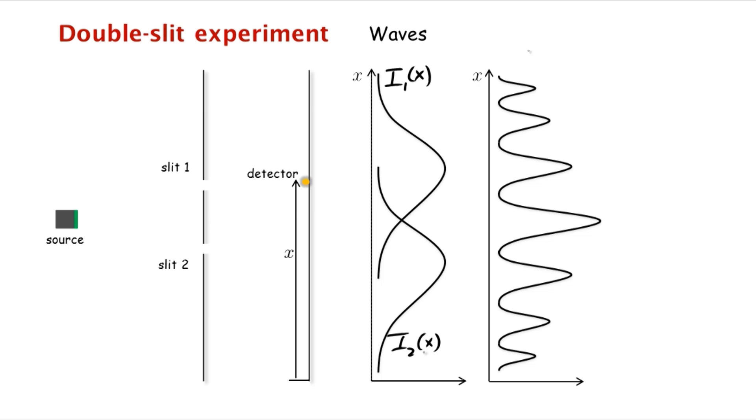But now, if both slits are open, we see this function i12 of x, the interference pattern. This was exactly the same interference pattern we got in the case of electrons and photons. But here, we have a very good explanation for why i12 of x is not equal to i1 of x plus i2 of x.